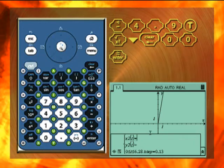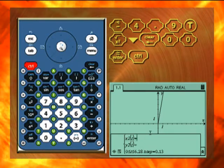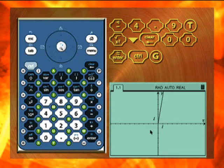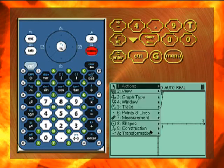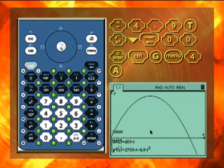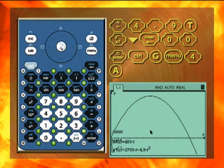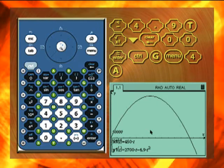Press control and G to remove the equation entry area. To see all of the graph, press menu, 4, and A to choose the zoom fit option. Now you can see the whole graph, and you can now see that this parametric graph is a parabola.